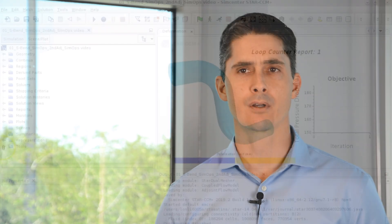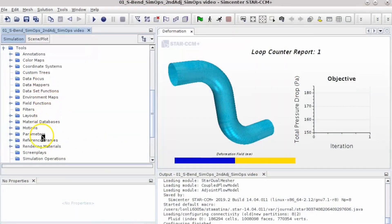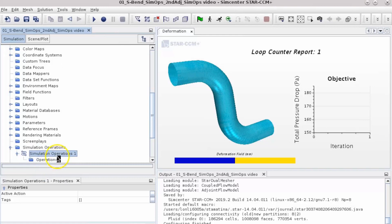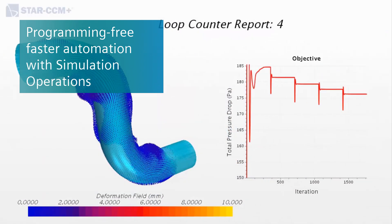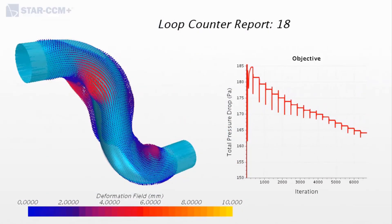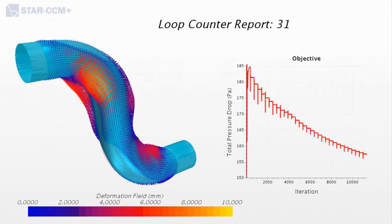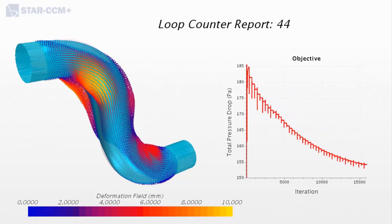Simcenter Star CCM Plus is also unmatched in automation, which is critical for improving productivity and enabling design space exploration. The new simulation operations capability takes this automation to a whole new level.